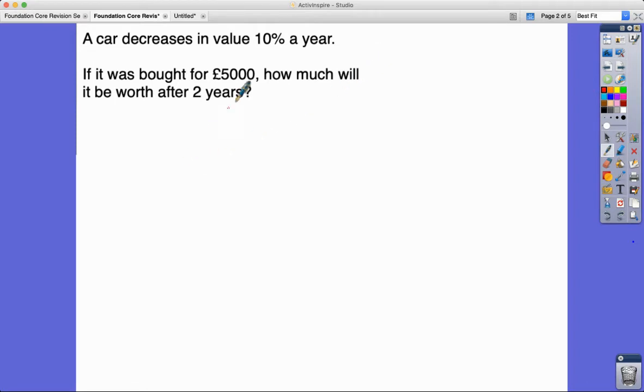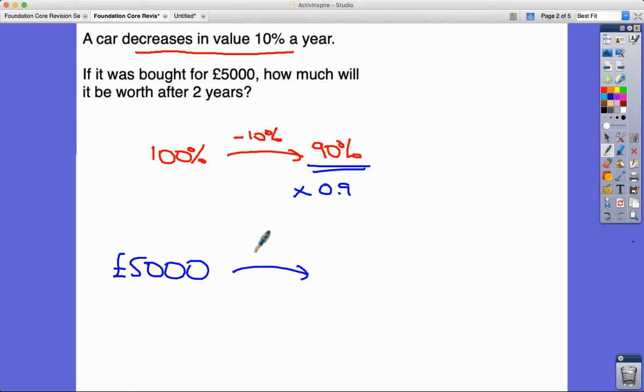Question 2. This time we've got a decrease in value of the car 10% a year. It was bought for £5,000. How much will it be worth in two years? So let's think about what a decrease of 10% actually means. We're taking 100% value, we're decreasing it by 10%, it becomes 90% of its original value. So that as a decimal is 0.9, and that's what I'm going to multiply by. So £5,000 times by 0.9 is equal to £4,500.